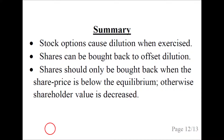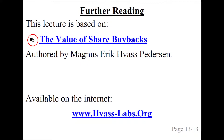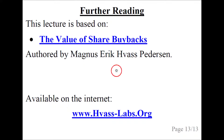To summarize: stock options cause dilution when exercised, and we can buy back shares to offset that dilution. However, that should only be done when the share price is below the equilibrium, otherwise shareholder value is decreased. This talk is based on the Treatise on Share Buyback Valuation, which is long and detailed, and can be found on the website linked in the description under the video.